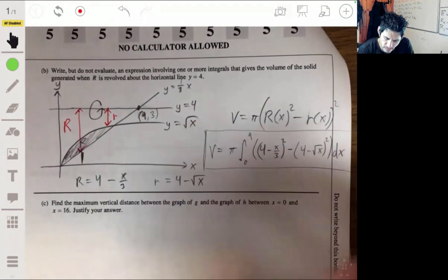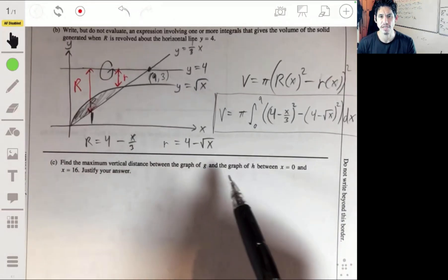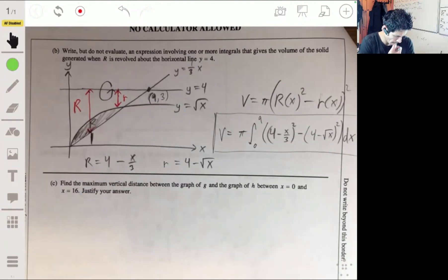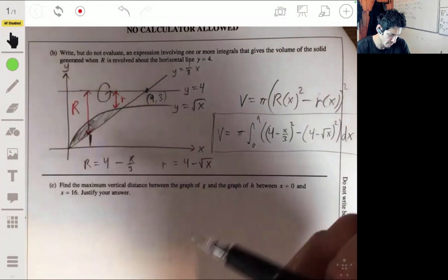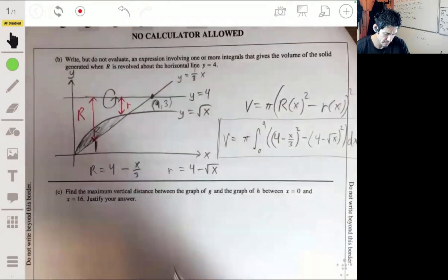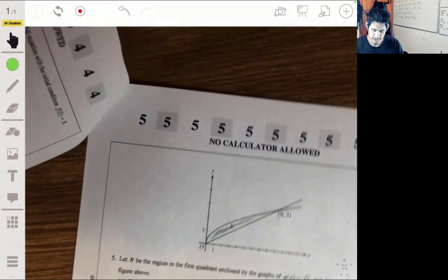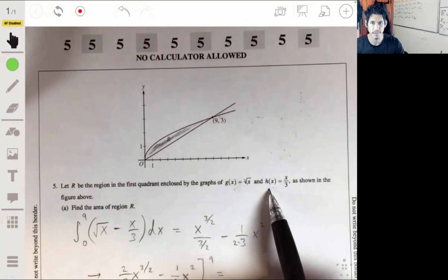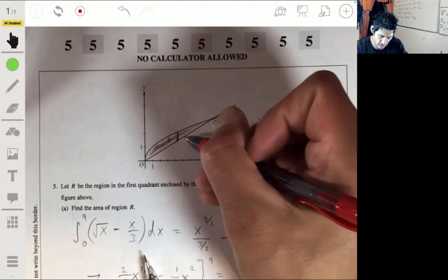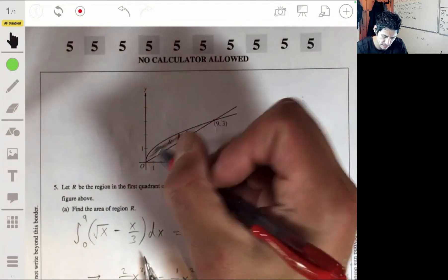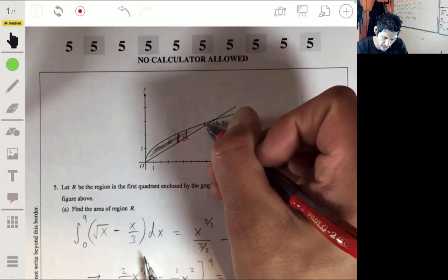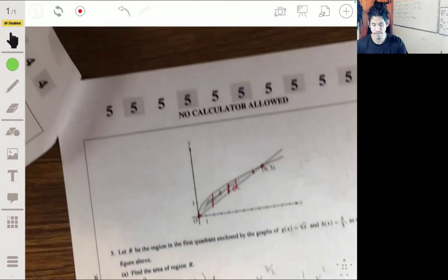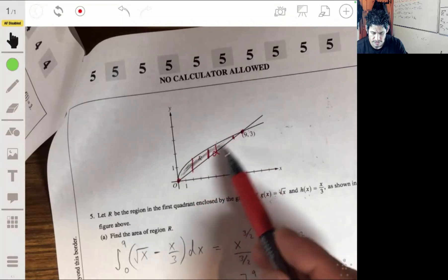All right. And the last one. Okay. Find the maximum vertical distance between the graph of g and the graph of h between x equals 0 and x equals 16. Justify your answer. So let's look for an equation for the distance between g and h. Let's go back to here. So the g is the square root of x, h is the x over 3. So the distance, remember, is this. Let's have this length d. We want to see when is that a maximum. You know, over here, you can see as it gets closer to the edge, it gets smaller because obviously it's going to get to 0. But when is it the greatest? When is that vertical line segment the greatest?